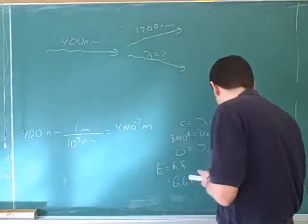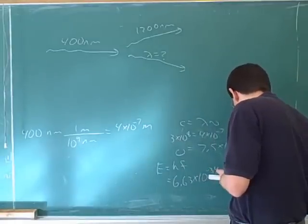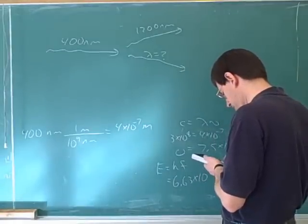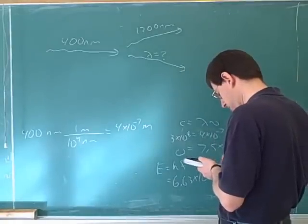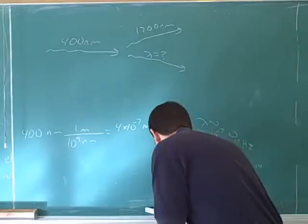So the energy is 4.97 times 10 to the negative 19 joules. Is that right? Right.